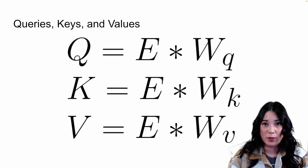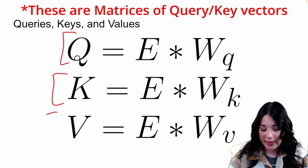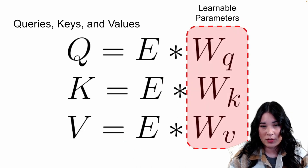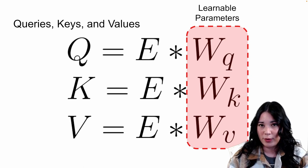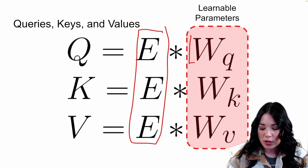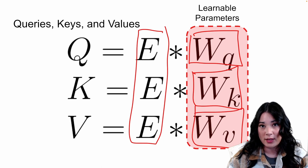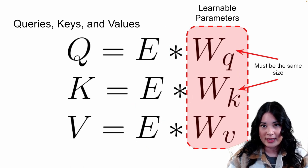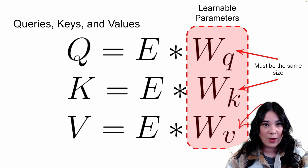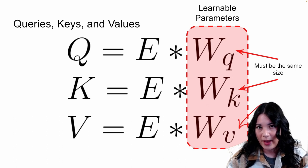Transformers create the query, key, and value vectors by taking all word embeddings — the same exact input for all three — and multiplying them by a weight matrix. These weight matrices are full of learnable parameters, which are what get trained when we train our transformers. They are also different for each attention head. So we're taking our word embeddings and projecting them into different spaces learned via these weight matrices, resulting in our queries, keys, and values. Just a quick note: the weight matrices for queries and keys must be the same size, but the ones for values could be a different size. In the 'Attention is All You Need' paper, all three happen to have the exact same size.